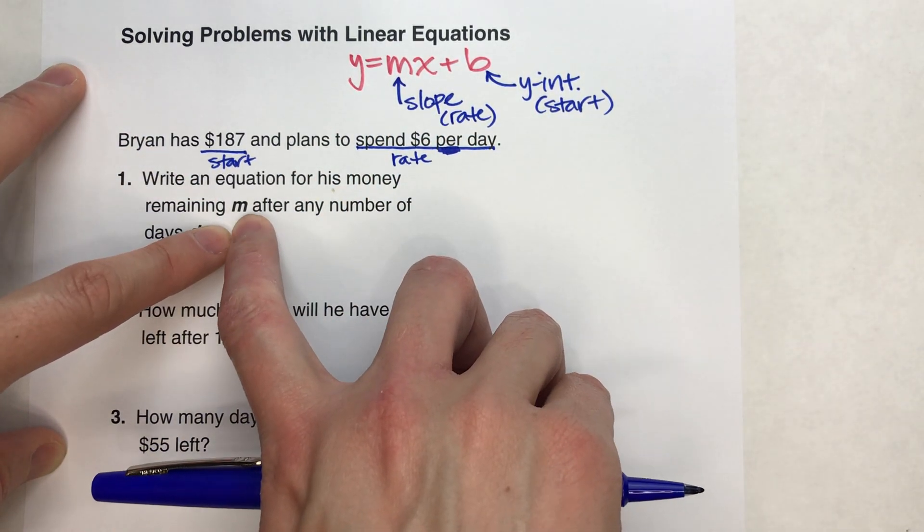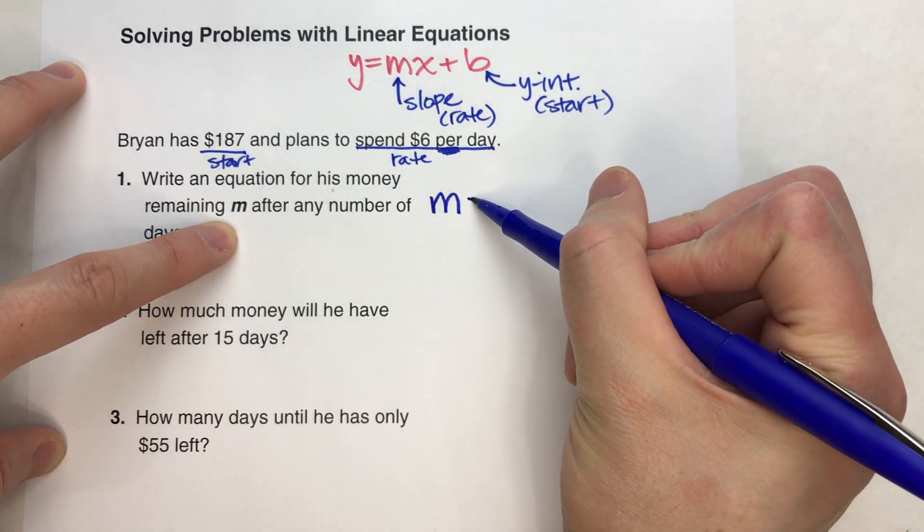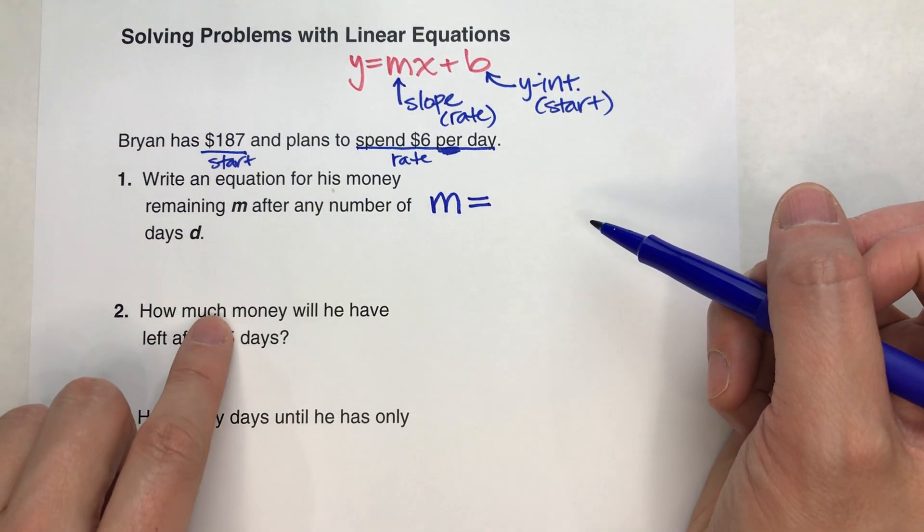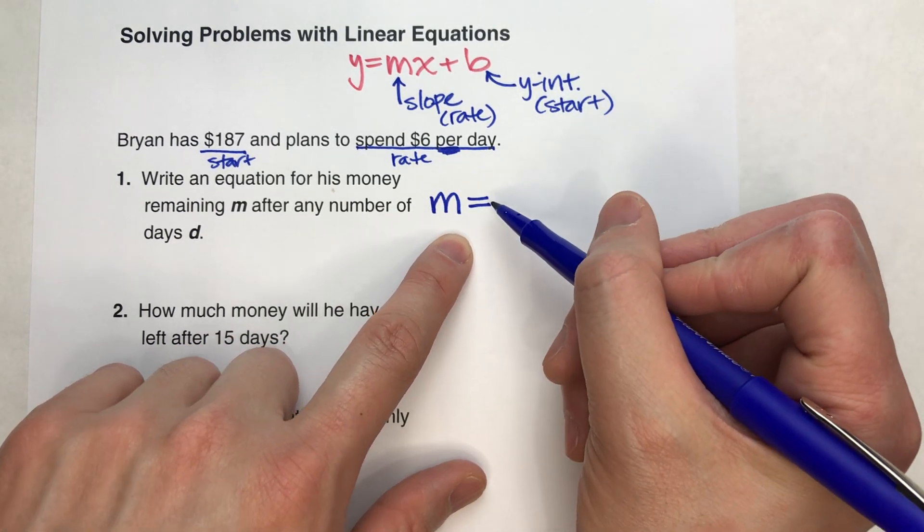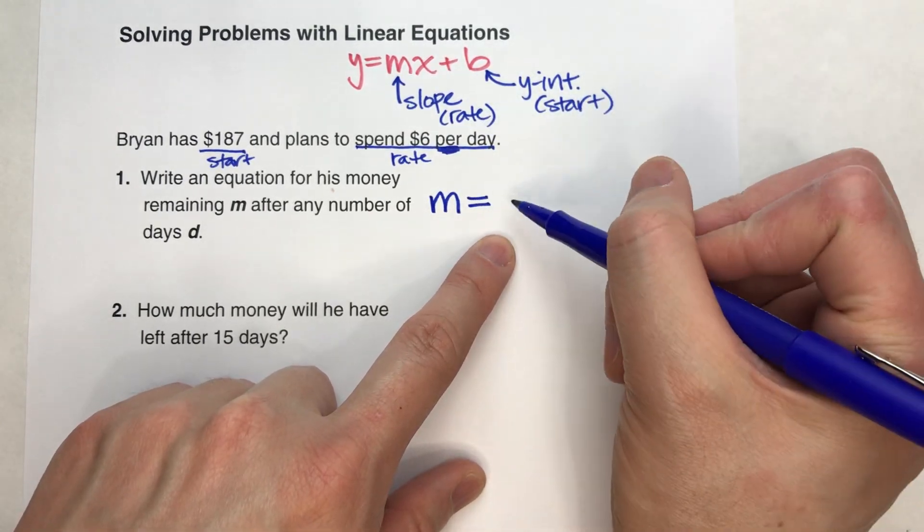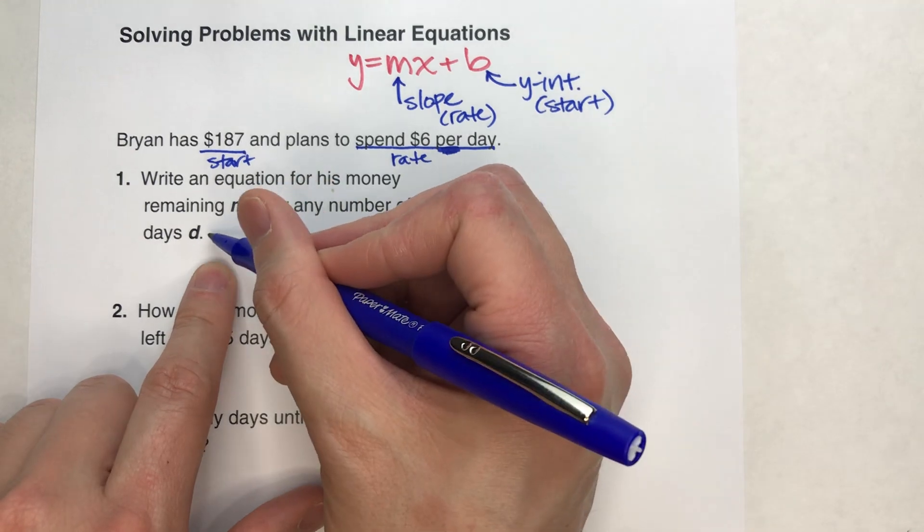So we know the variable we are going to be figuring out is the m. So our equation is going to be m equals. So how do we figure out how much money he has? Well, we know he's spending $6 per day. So negative 6 times the number of days. In this case, we're using d.